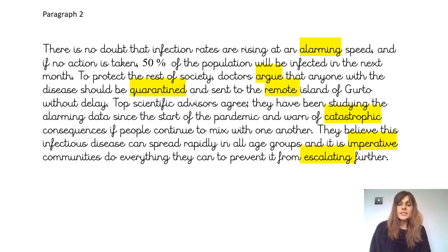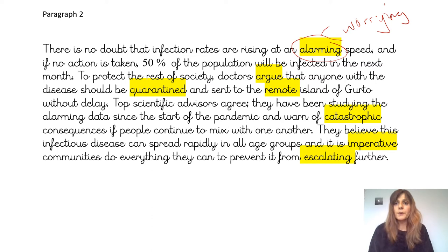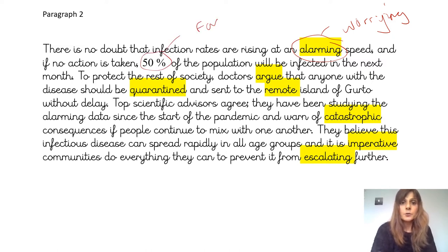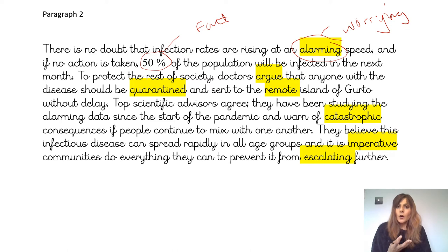Let's read paragraph two. This paragraph is in support of banishing lepers — all the evidence and points made support yes, lepers should be banished from society. 'There is no doubt that infection rates are rising at an alarming speed, and if no action is taken, 50% of the population will be infected in the next month.' The word alarming means worrying — it's something to be shocked and worried about. 'To protect the rest of society, doctors argue that anyone with the disease should be quarantined and sent to the remote island of Goethe without delay.' The word argue is used instead of say — it is a stronger word and supports the argument further.